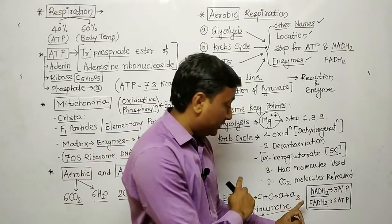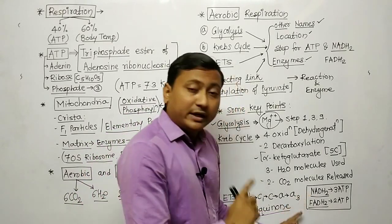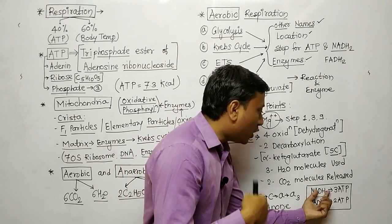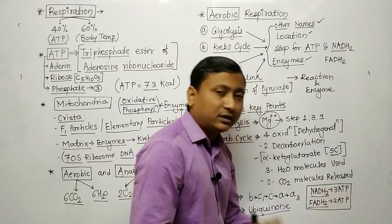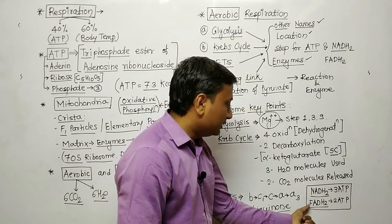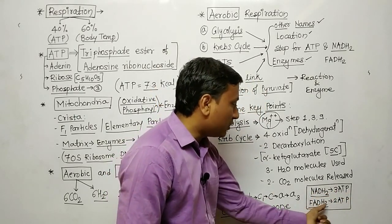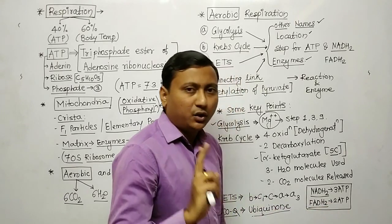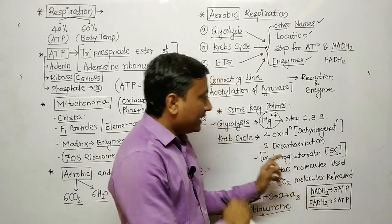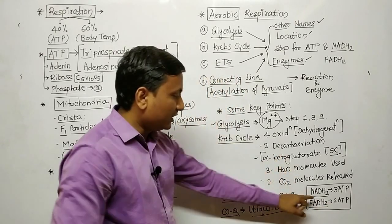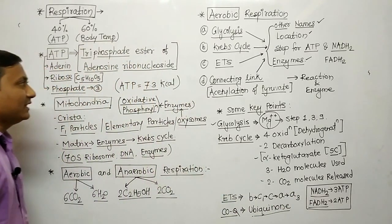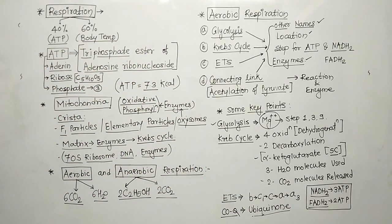In ETS, oxidation of NADH2 produces 3 ATP molecules. Oxidation of FADH2 produces 2 ATP molecules. These values are all related to energy calculation — keep these relevant points in mind.